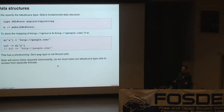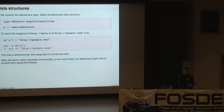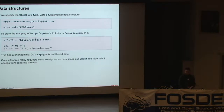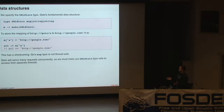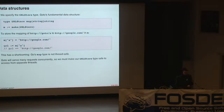Now that we've decided to use a map, let's specify the actual type for our program — we'll call it URLStore. This is a Go type definition: I'm giving the name URLStore to a map of strings to strings. To instantiate this hash map, I use the make function. However, the map type isn't thread safe. If we want to write to the map from multiple threads, we need some way of moderating access to that type. Since we're going to be serving a web application, by definition it has many concurrent requests coming at it at once.